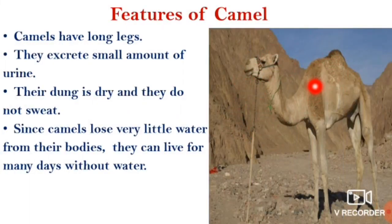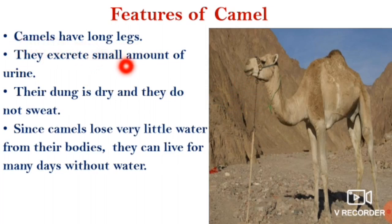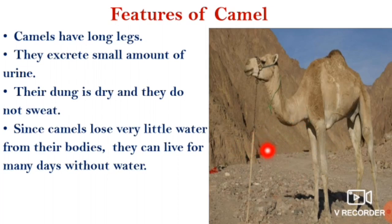This is the image of camel. Camels have long legs which help to keep their bodies away from the heat of the sand. In the desert, as you know, there is a hot and dry climate. So camels have very long legs that help to keep their bodies away from the heat of the sand.